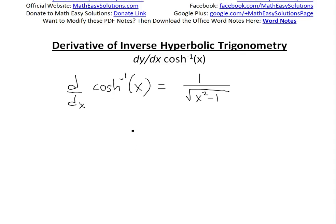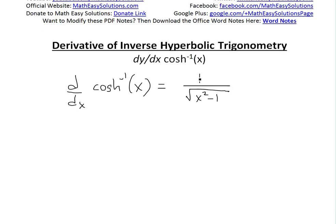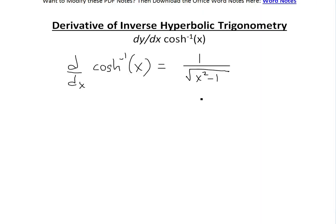Hi, it's time for another Math Easy Solution. We're going to discuss further the derivatives of inverse hyperbolic trigonometry, and now look at the derivative of inverse hyperbolic cosine of x. We'll show that it's equal to 1 divided by the square root of x squared minus 1.